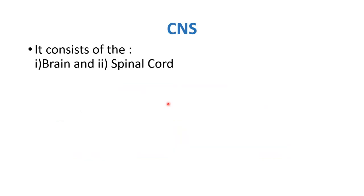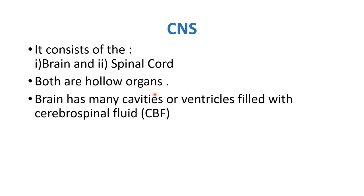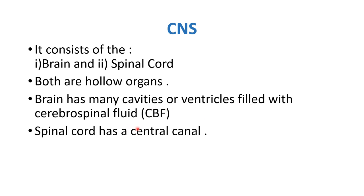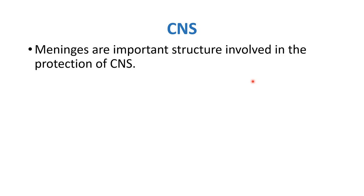We start with the central nervous system. It is divided into the brain and the spinal cord — both are hollow organs. The brain has many cavities called ventricles filled with cerebrospinal fluid. The spinal cord has one central canal. The central nervous system is protected by the meninges, which play an important role in its protection.